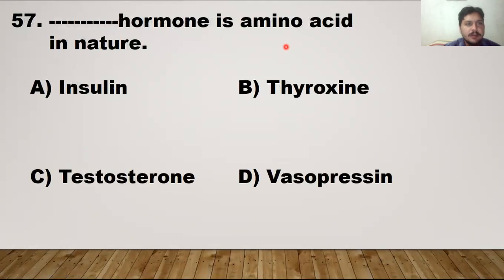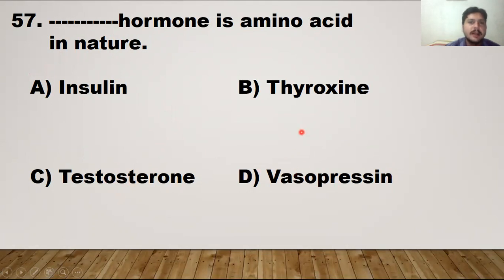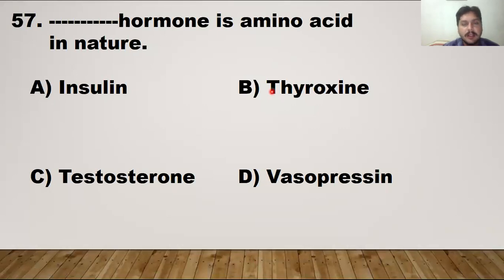MCQ number 57: which hormone is amine in nature? Insulin is protein in nature, testosterone is a steroid in nature, and vasopressin is a polypeptide in nature. So the right answer is option B — thyroxine. Thyroxine is the hormone that is amine in nature.